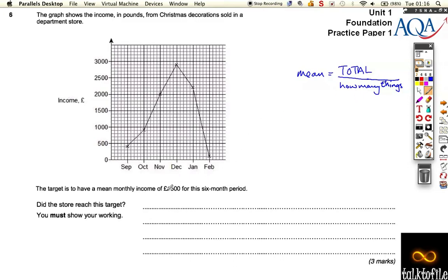So, the target is to have a mean income of £1,500. Okay? So, if the mean has got to be like that, and we've got 1, 2, 3, 4, 5, 6 month period, it means the total money taken has got to be £1,500 times 6.